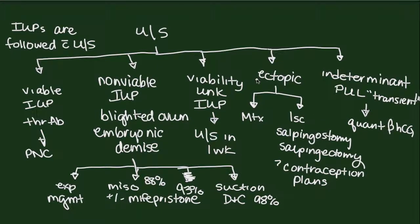Ectopic pregnancies treated with methotrexate do get quantitative beta-HCGs as part of that treatment algorithm, but the patient is getting those quants as part of the treatment protocol — not because we're trying to determine whether the pregnancy is growing or viable. In the case of an indeterminate scan or pregnancy of unknown location, a quantitative beta-HCG should be drawn and the result used as one additional piece of information alongside lab work, radiology studies, history, physical exam, and clinical intuition.